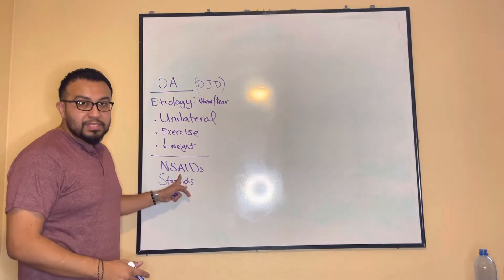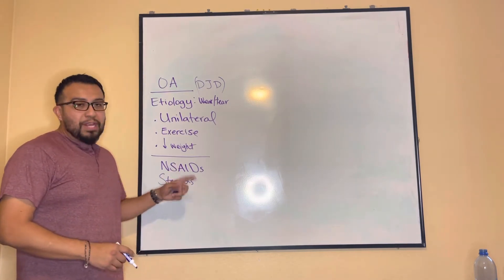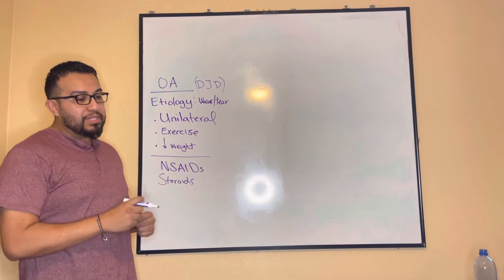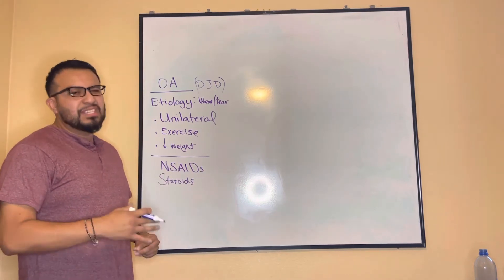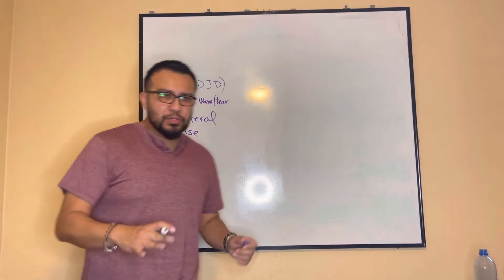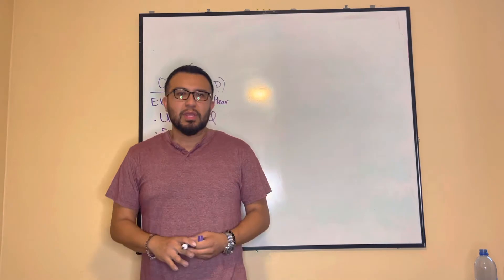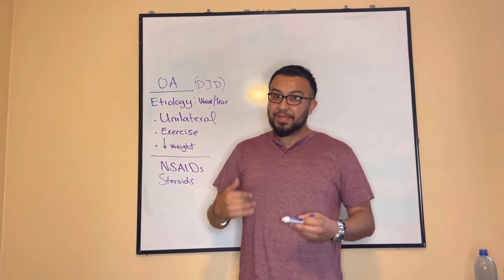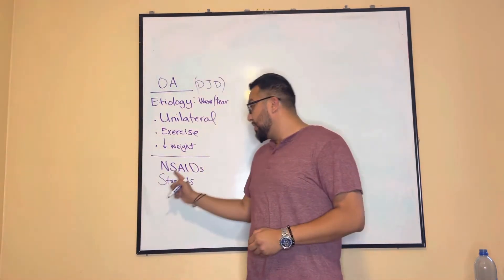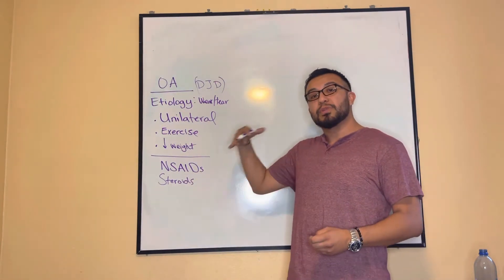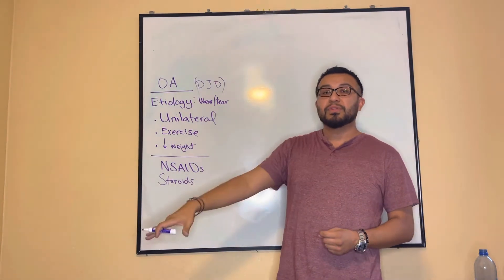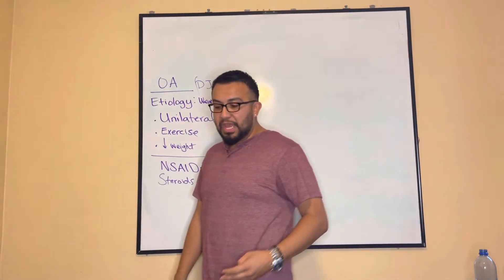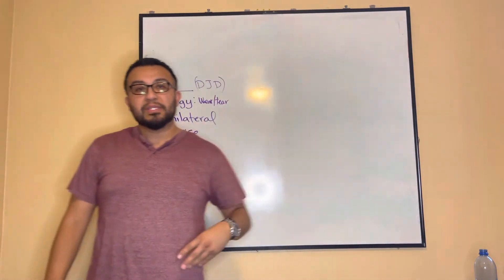For NSAIDs, also consider that COX-1 and COX-2 inhibitors decrease blood flow to the kidneys to some degree. Most patients won't have issues, but if someone has an underlying kidney condition, you have to be careful, because it will reduce blood flow to the kidneys — and those patients will suffer the consequences if they have susceptibilities to kidney issues.